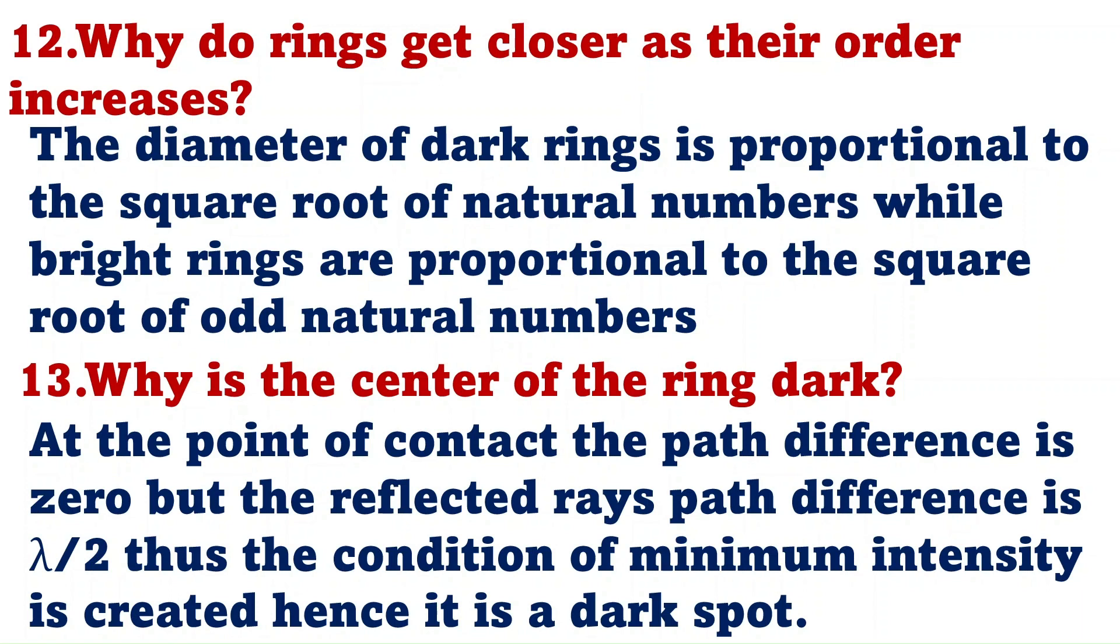Why is the center of the ring always dark? At the point of contact, the path difference is zero, but the reflected ray's path difference is lambda by 2. Because of this condition of minimum intensity is created, hence the center is a dark spot.